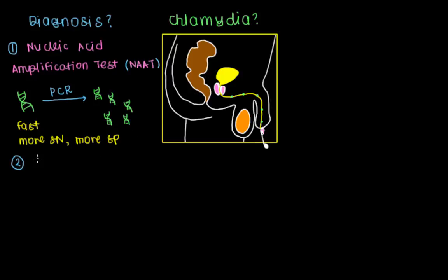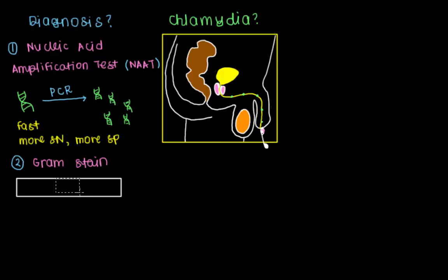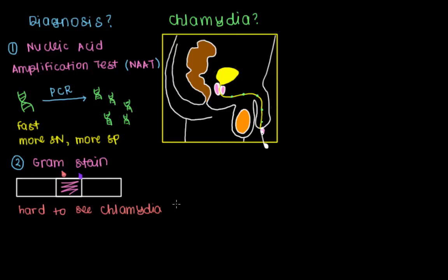Another test that can be used is a traditional gram stain. The steps involve taking the swab sample and smearing it on a microscopic slide, then adding a series of several drops — washing and adding additional drops over time. This would help us visualize if the chlamydia bacteria are actually present. But the problem is that chlamydia, because it's an intracellular organism that likes to stay within cells, is hard to see with a traditional gram stain. So this test isn't often used anymore.